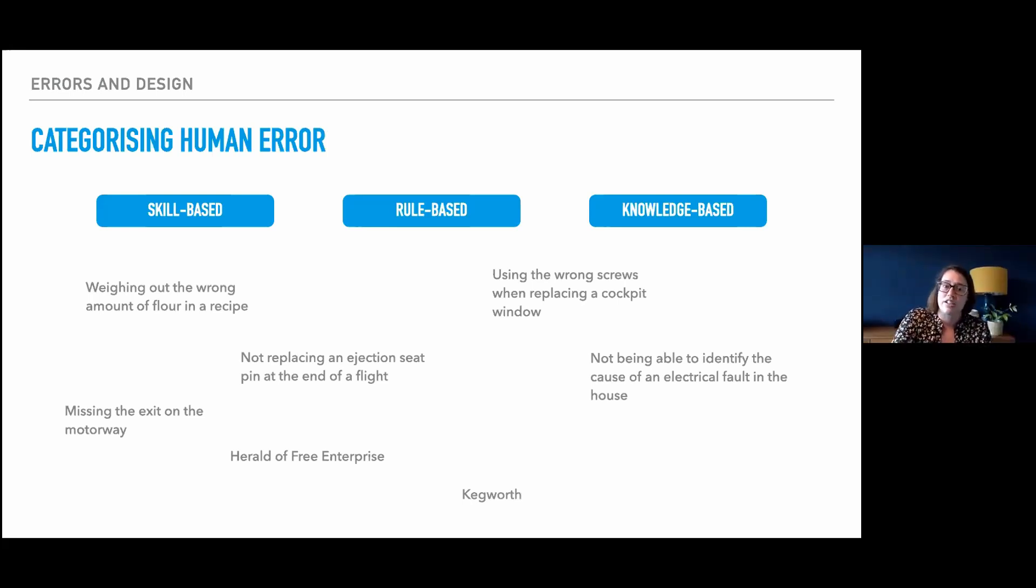Similarly, with the Kegworth air disaster, we can very simply label that as a rule-based error. But again, it's going to miss some of the much bigger contextual factors behind it. I think Challenger and Chernobyl are ones that were really on the edges of people's experience, on the edges of people's understanding and knowledge about the system. And those factors starting to become major contributors to the errors that were made. I think some of these ones, actually these models can start to be useful because when you look at those and they fall quite clearly into one of the categories, that does give you some point of how to go about correcting those errors and where mitigations are needed.